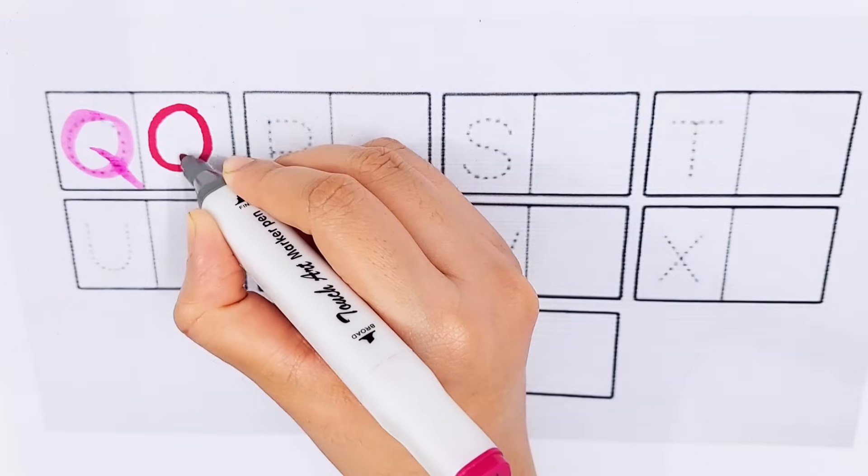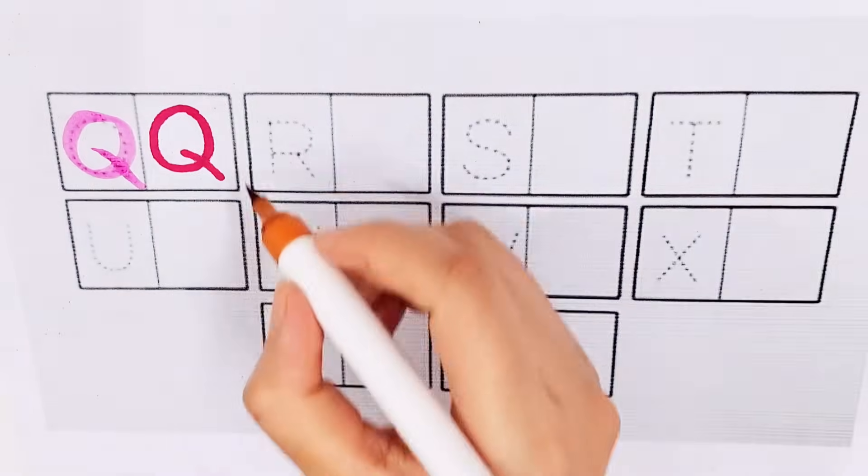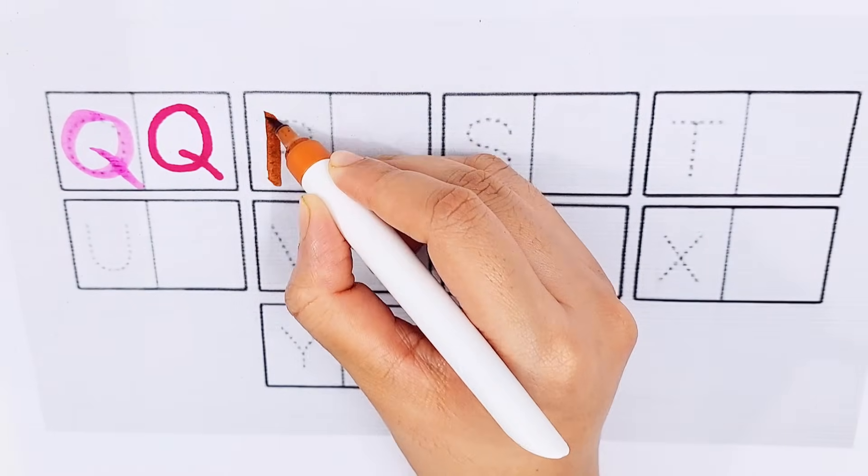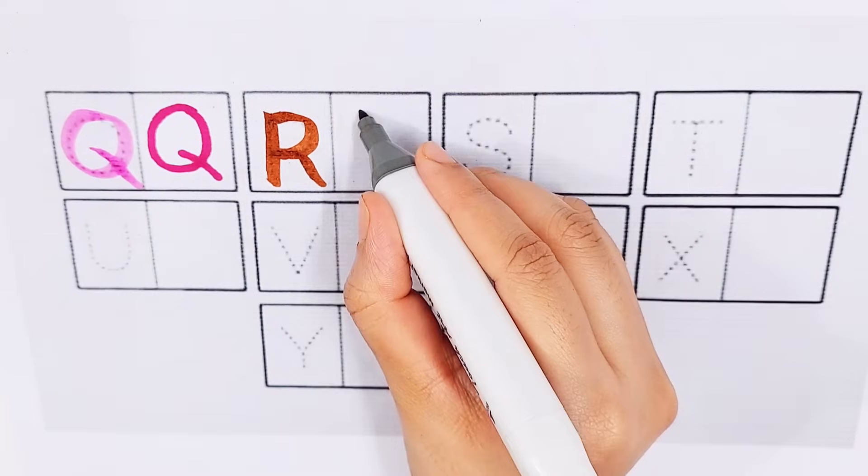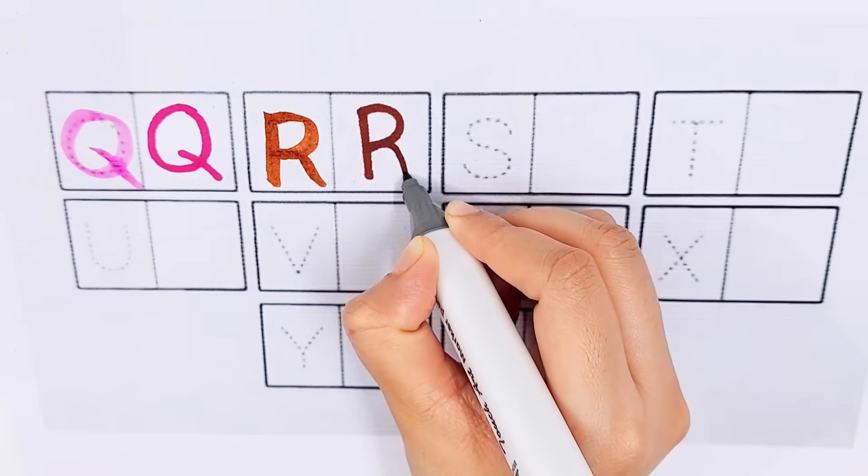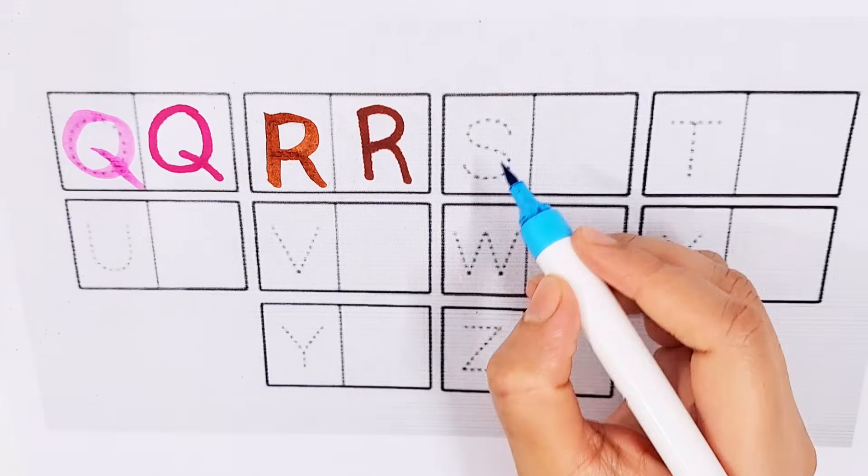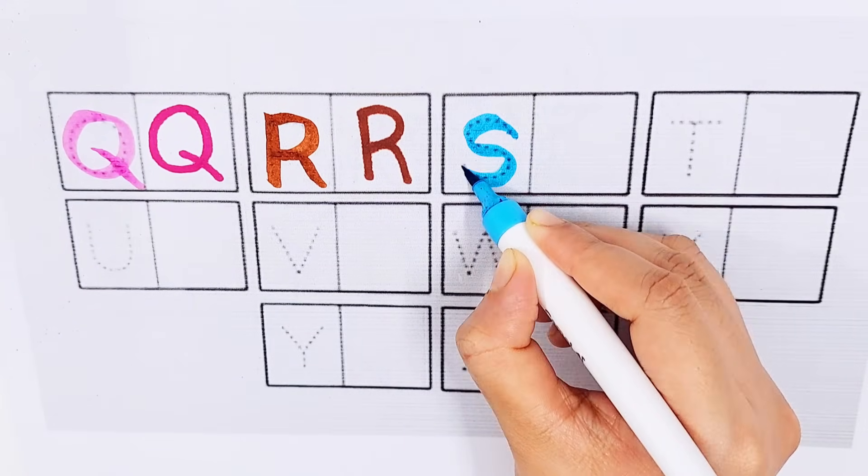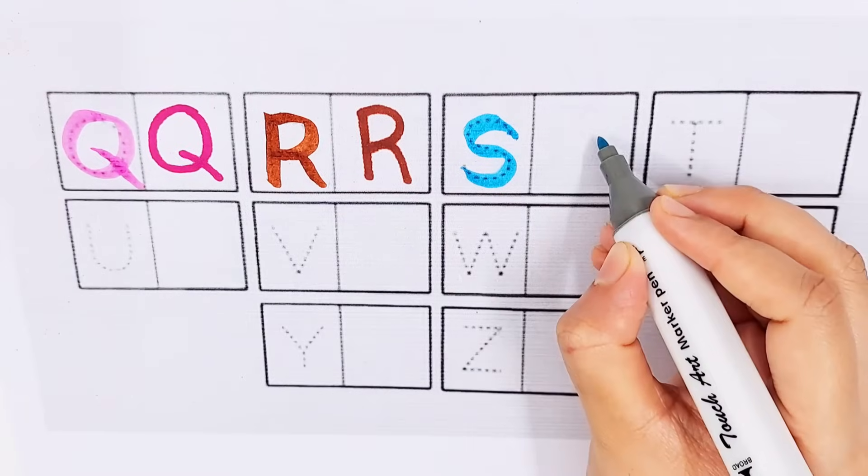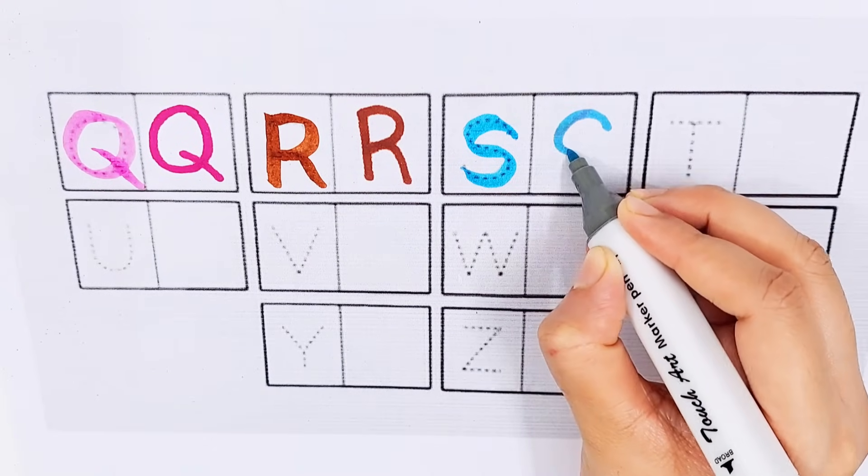Q Q for question, Q Q for queen. R R for rain. S S for sky, S S for sun.